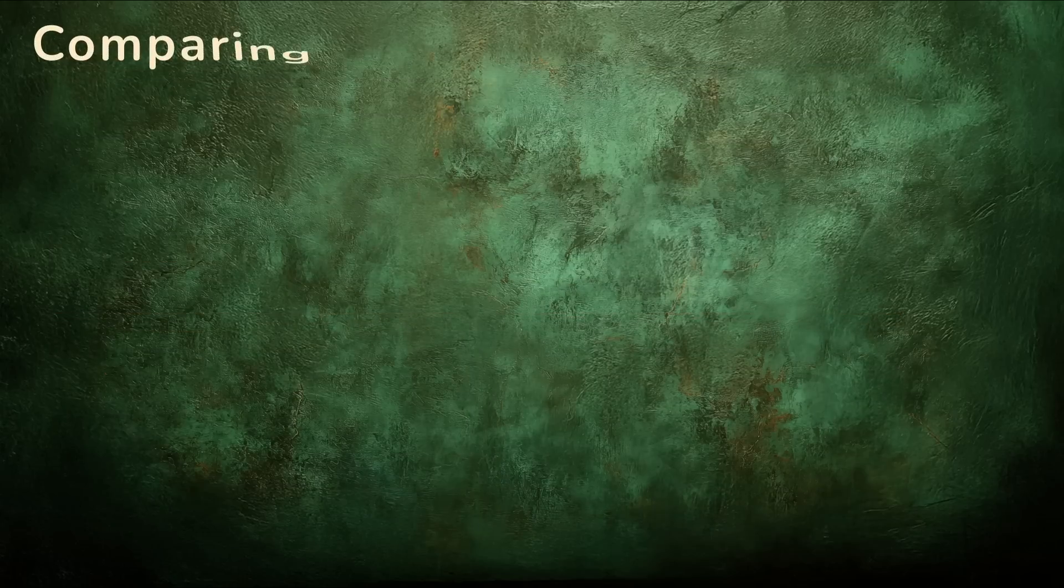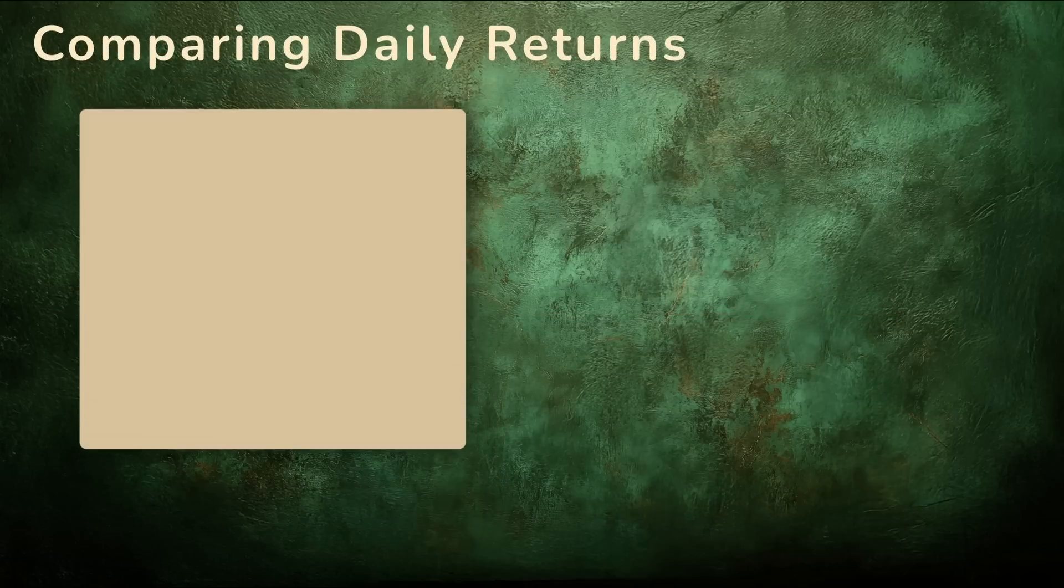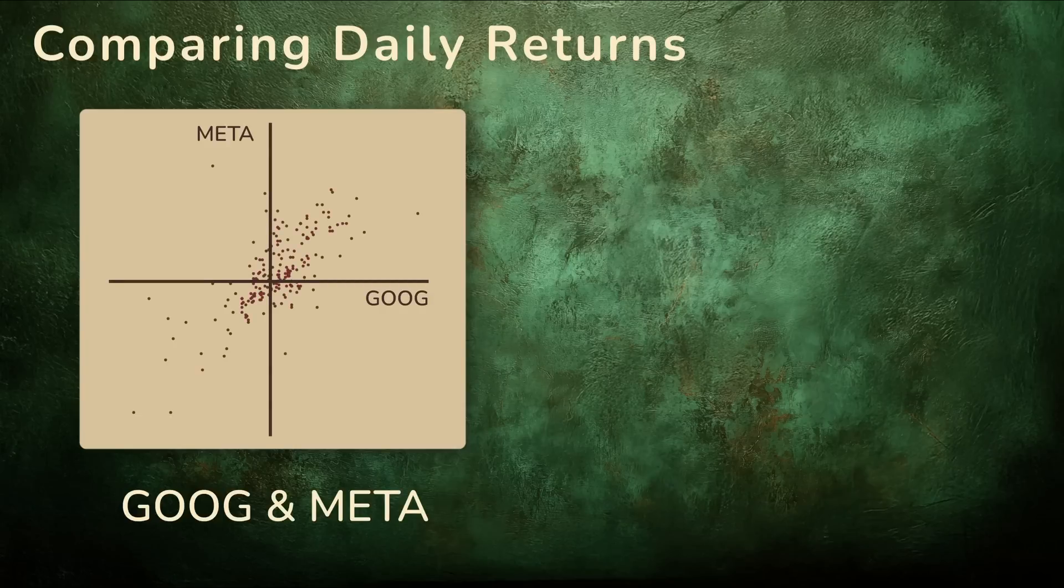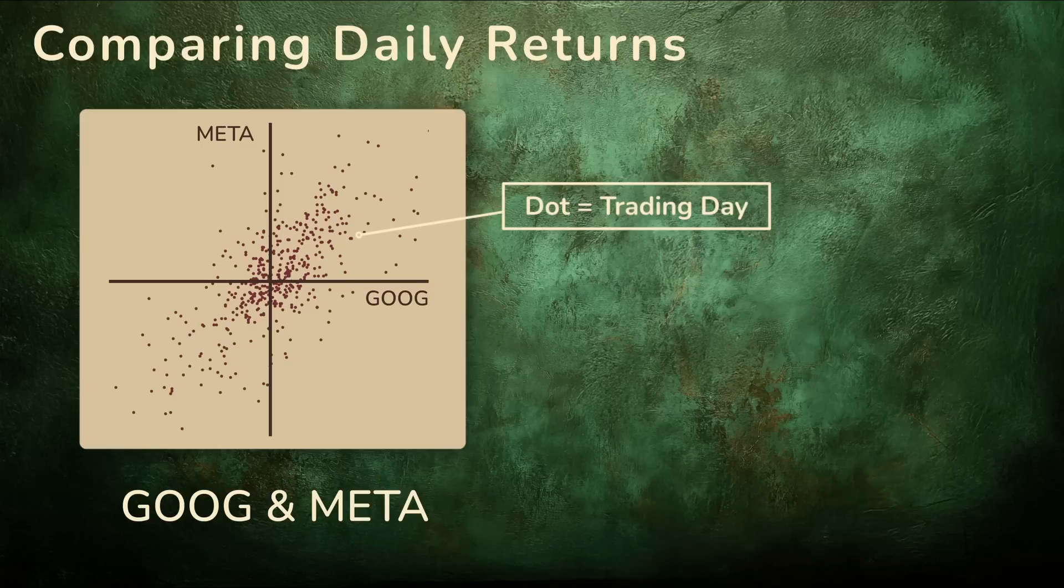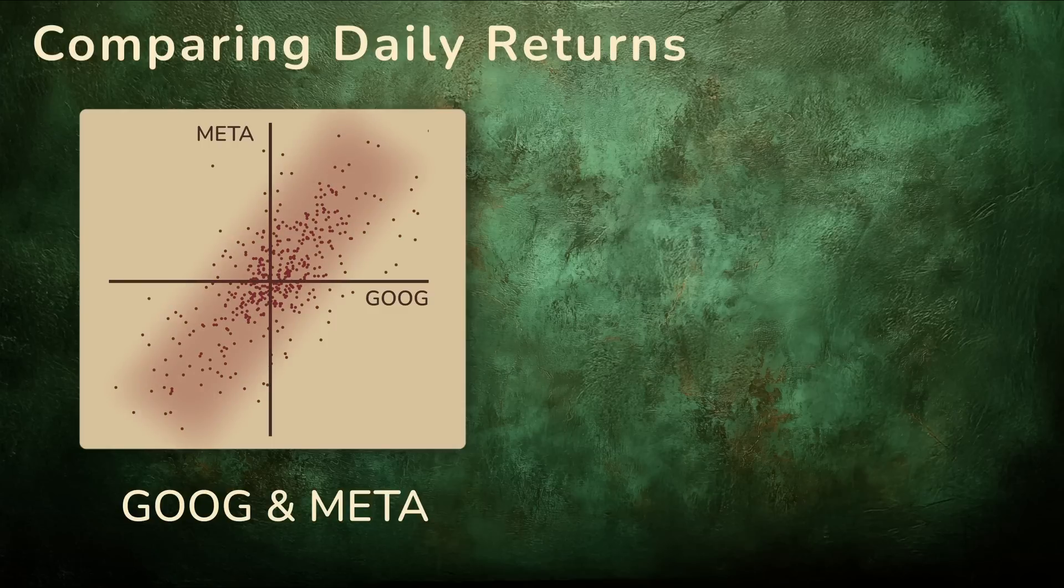So to better see the relationship, we plot one return versus the other. Here's a scatter plot of daily returns for Google and Meta during 2017 and 2018. Each dot is a trading day. When Meta had a good day, Google usually did too. When Meta dropped, Google often followed. The dots cluster from the lower left to the upper right, a clear directional trend.